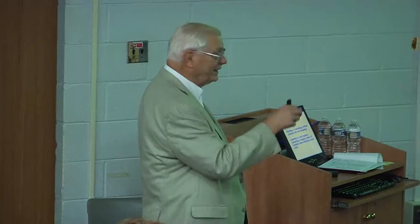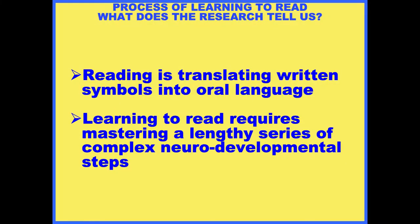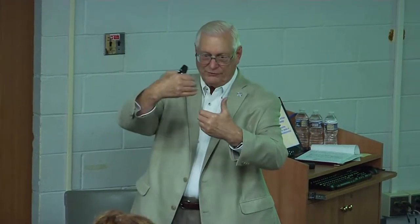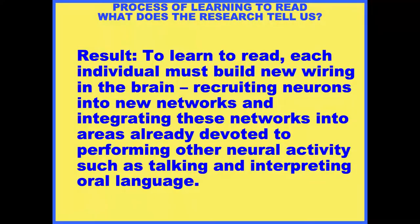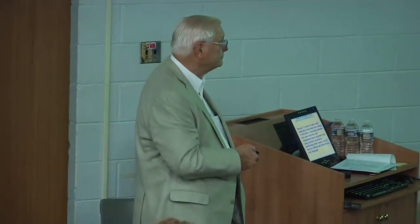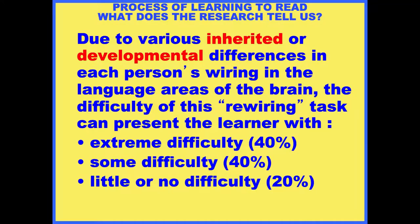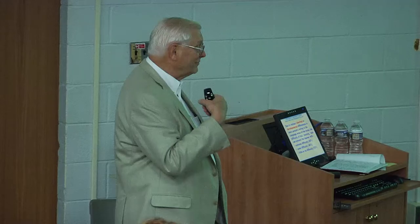When you use your left hemisphere to start to learn to read, you are literally rewiring — building new wiring in there. What you do when you're trying to learn to read is take little marks on paper, symbols, and learn that those symbols can represent certain sounds. Then you learn how to put a series of those symbols together with the sounds they represent, translate the symbols into the sounds, join the sounds together, and now you've sounded out a word. Learning to read is a lengthy series of complex neurodevelopmental steps — you've got to rewire the brain. Due to various inherited developmental differences in each person's wiring in the language areas of the brain, the difficulty of this rewiring task can vary. For about 40% of kids, it's extremely difficult; about 40%, somewhat difficult; and for about 20%, not that hard.